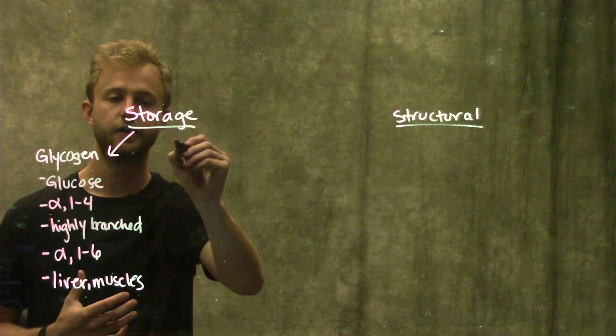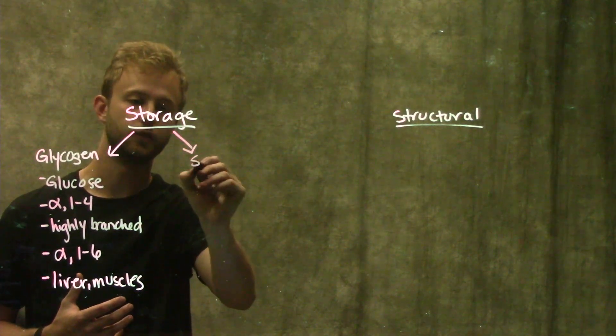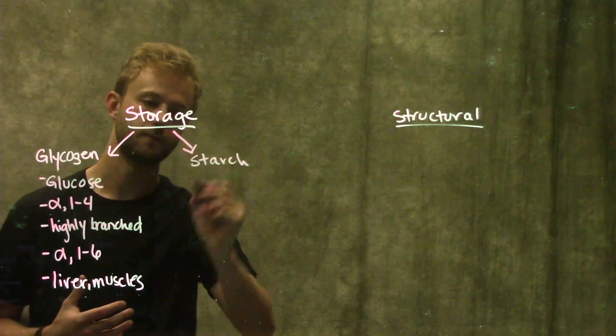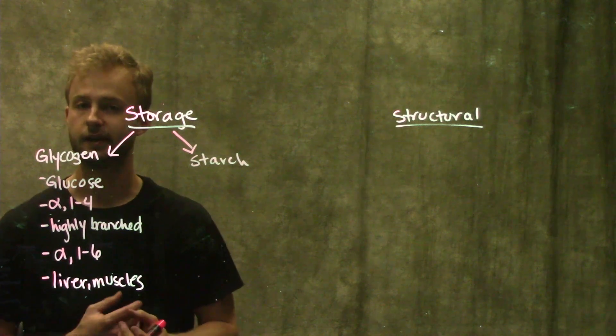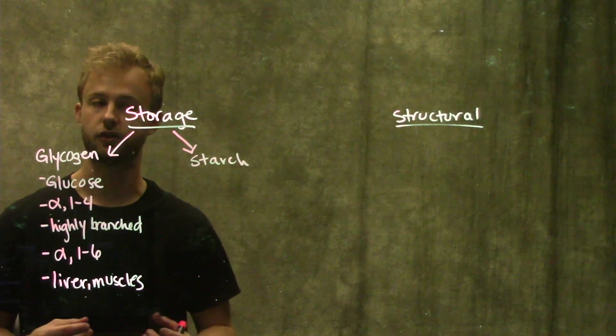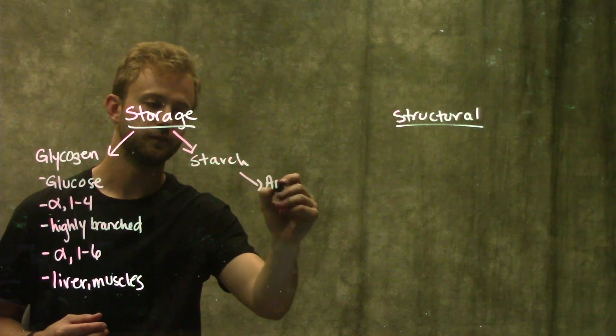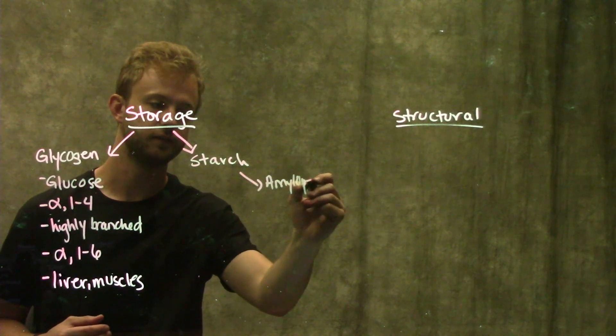In plants, they store their glucose in the form of starch, but it gets a little more complicated because we have two different kinds of starch. The first one is called amylopectin.